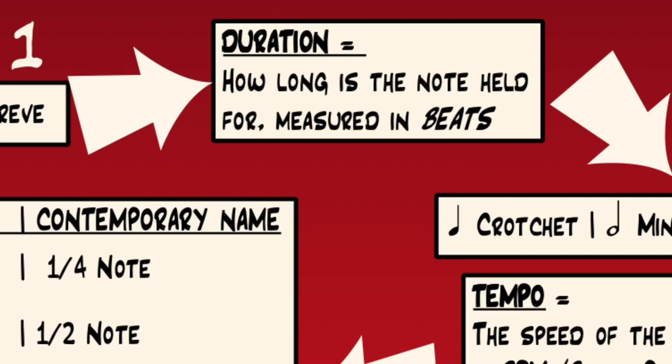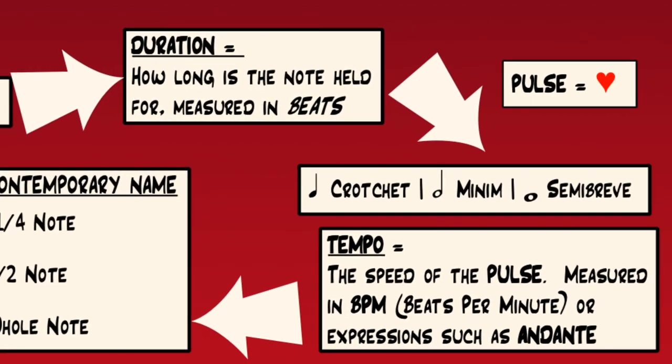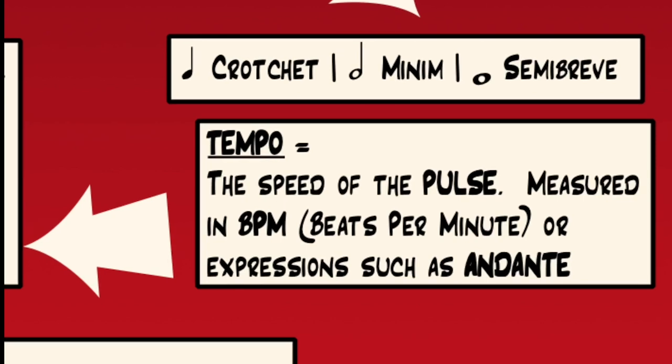We use the term duration to describe how long a note is held for, but we don't measure this in seconds but rather in pulses or beats. For example, we might have one note which is held for one beat, or we might have another note which is held for four beats. But it'd be very difficult to tell the difference unless we had a reference point, and that reference point is our pulse or our beat. We use the word tempo or BPM to describe how fast that pulse is going.